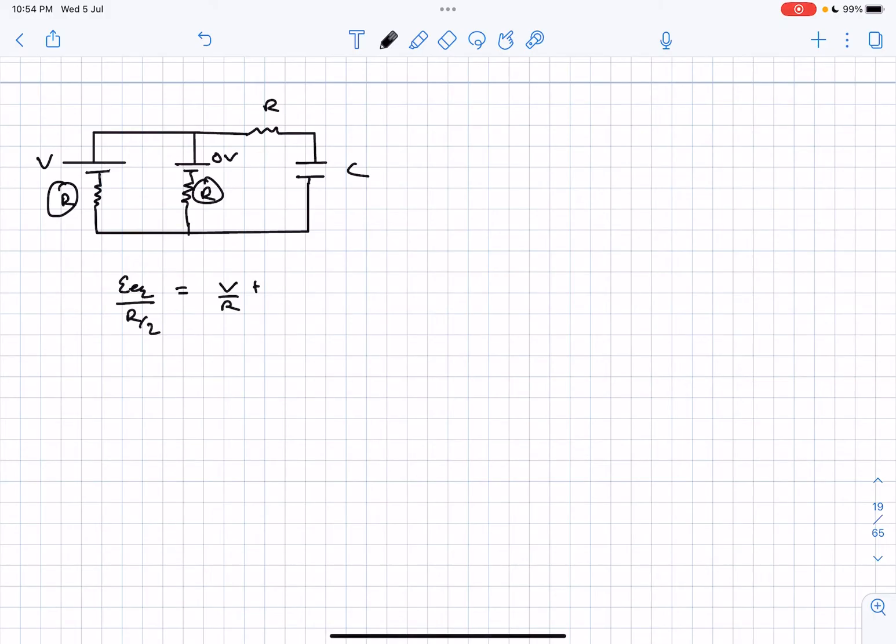E1 is V divided by R plus E2 is 0 divided by R, and we'll get the value of E equivalent as V by 2 and R equivalent as R by 2.